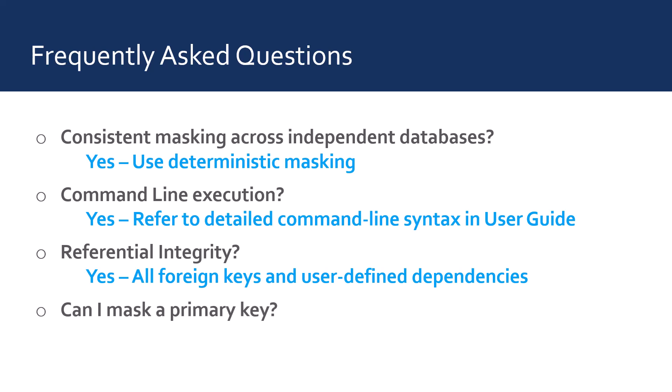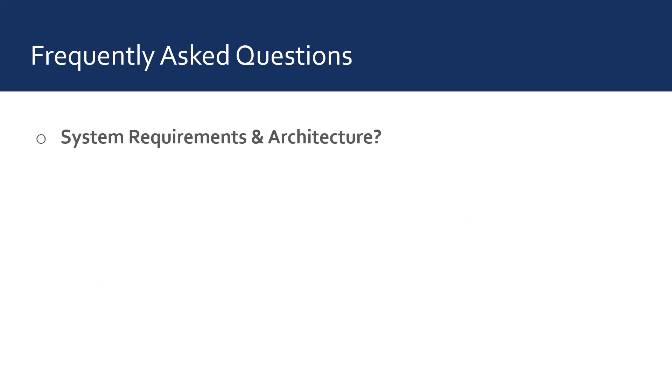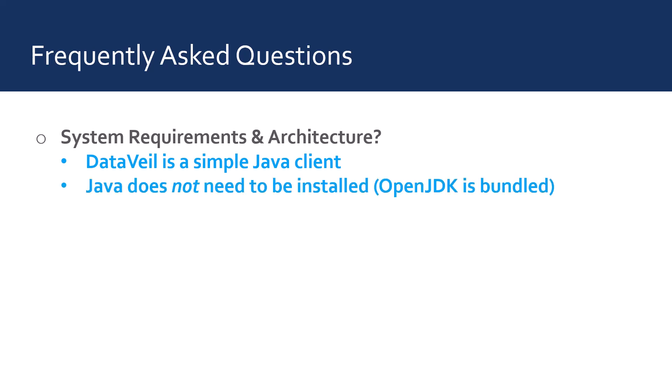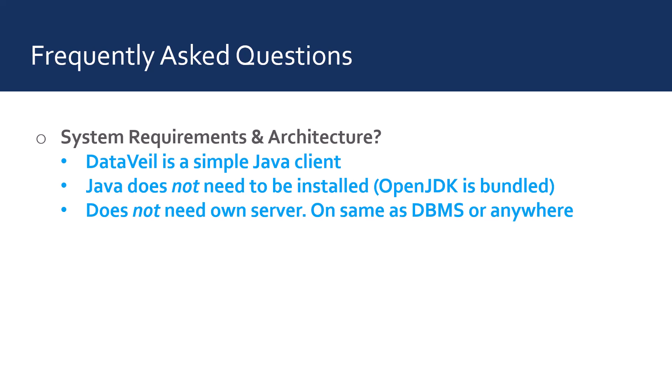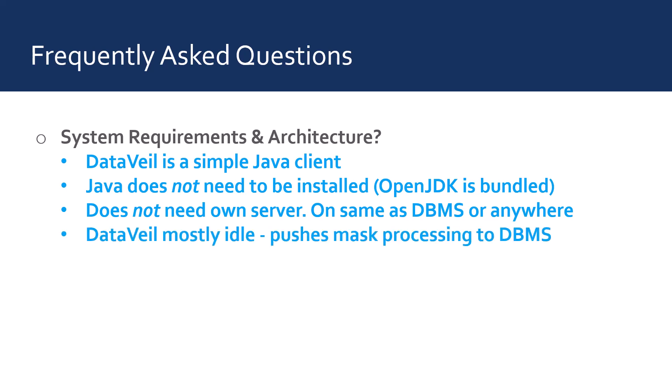You just configure a mask on any one column in the dependency tree, and DataVal will mask all columns in the dependency automatically. If a dependency exists but there isn't a foreign key defined in the database, then DataVal lets you define a dependency within DataVal that will work exactly like a foreign key, but without changing the database schema. Can DataVal mask primary keys? Yes — generally you shouldn't need to, as such columns usually don't contain sensitive data, but if you need to, then you can. What are the system requirements of DataVal? DataVal is a simple Java client, although you don't need to have Java installed because DataVal is delivered with a bundled and pre-configured OpenJDK, so it will all work out of the box. DataVal can run anywhere — it does not need its own server. It can even be run on the same server as a DBMS or on a desktop across a network. DataVal does not use much in terms of processing resources. It pushes all masking processing onto the DBMS, so your DBMS server will get busy, but DataVal will remain mostly idle because it acts only as a controller during masking. No sensitive data leaves the DBMS while masking.